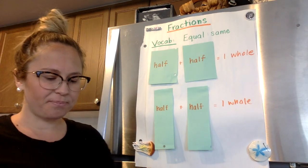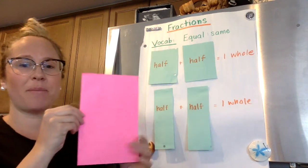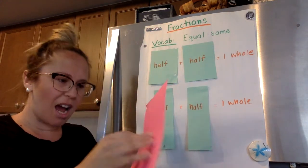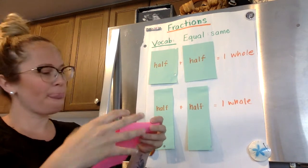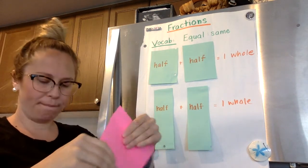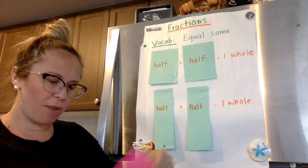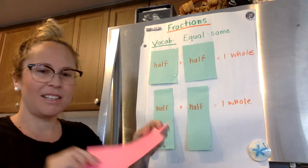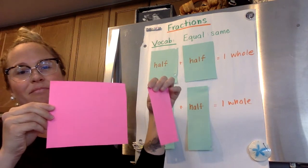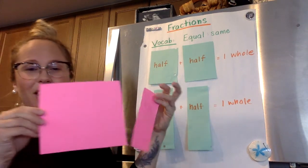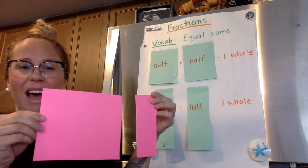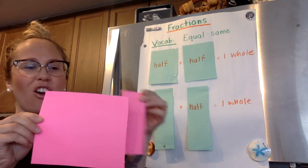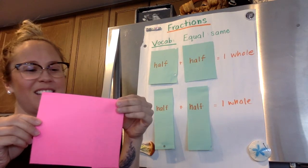Let me show you what I mean. If I take the same size piece of paper and I try to cut it in half, I'll fold it and then cut right on that line. Now I've got halves — no, these are not halves. Why are these not halves? Boys and girls, the reason these are not halves is because the fractional parts are not the exact same size. So this is not a half.